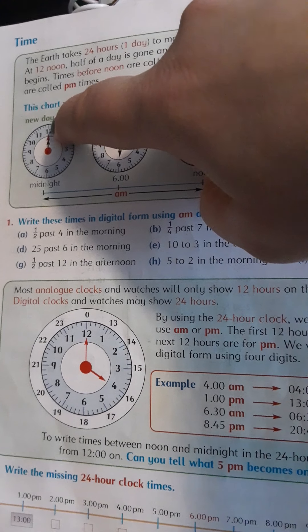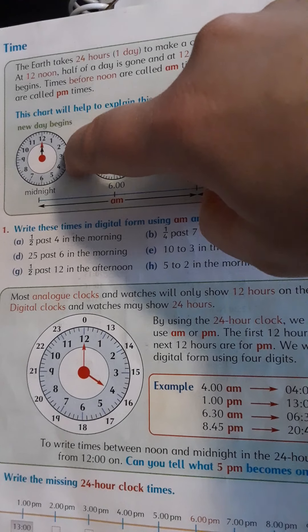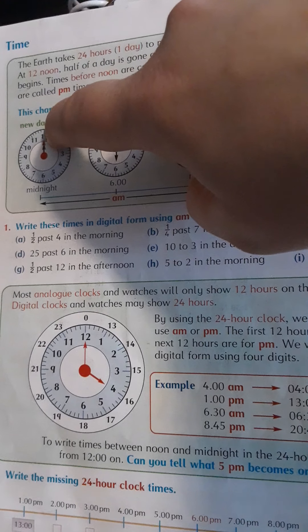And then you've got 1 a.m., 2 a.m. - these are the times when you're asleep, 3 a.m. and so on, all the way around until the middle of the day which is 12 noon.